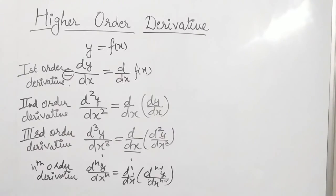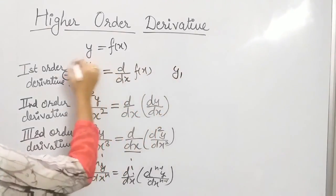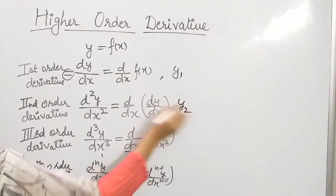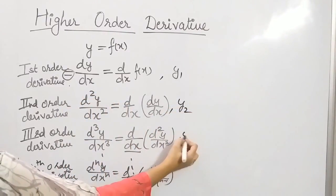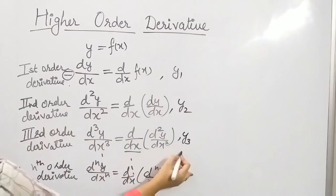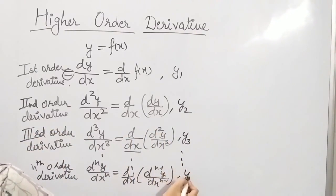We can also write derivatives using another notation: y₁ for dy/dx, y₂ for the second order derivative, y₃ for the third order derivative, and similarly yₙ for the nth order derivative.